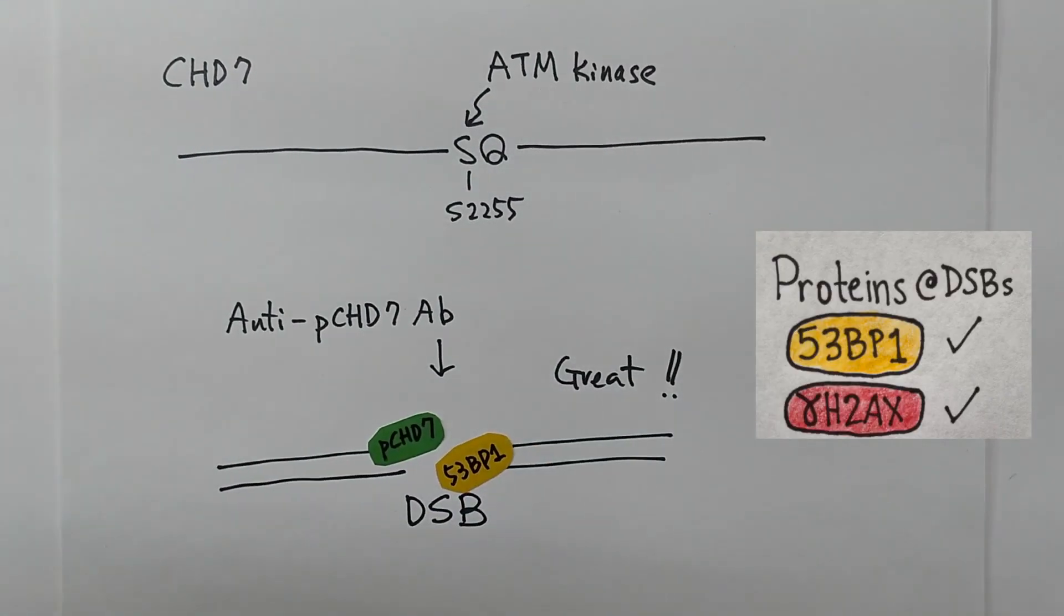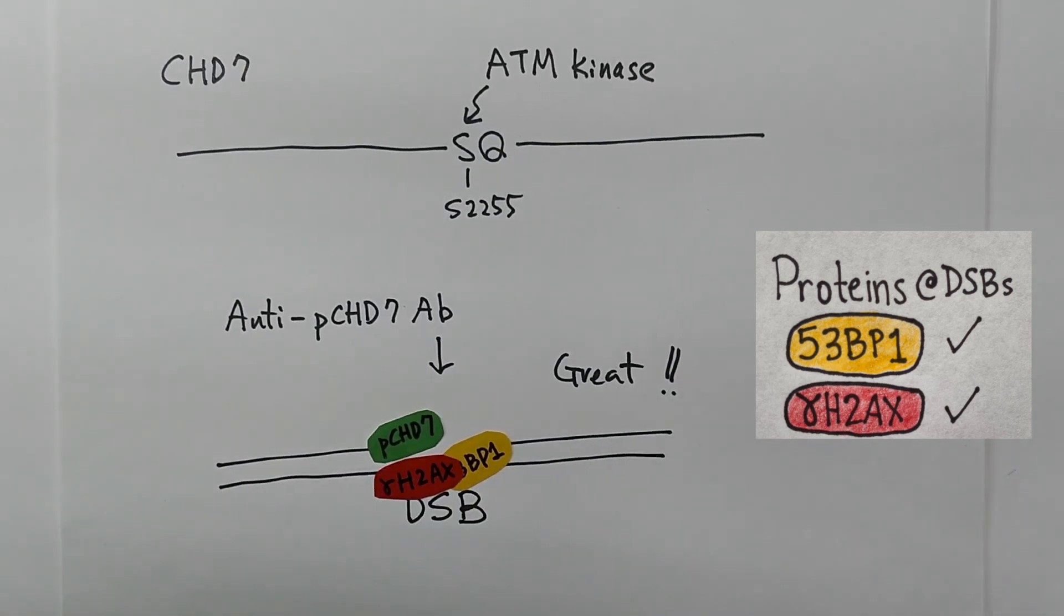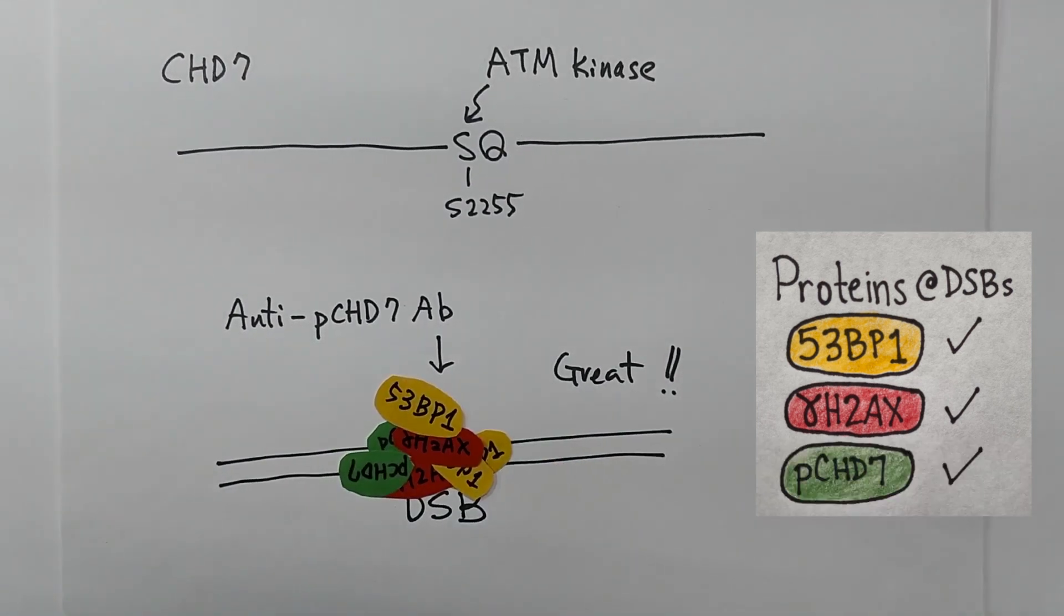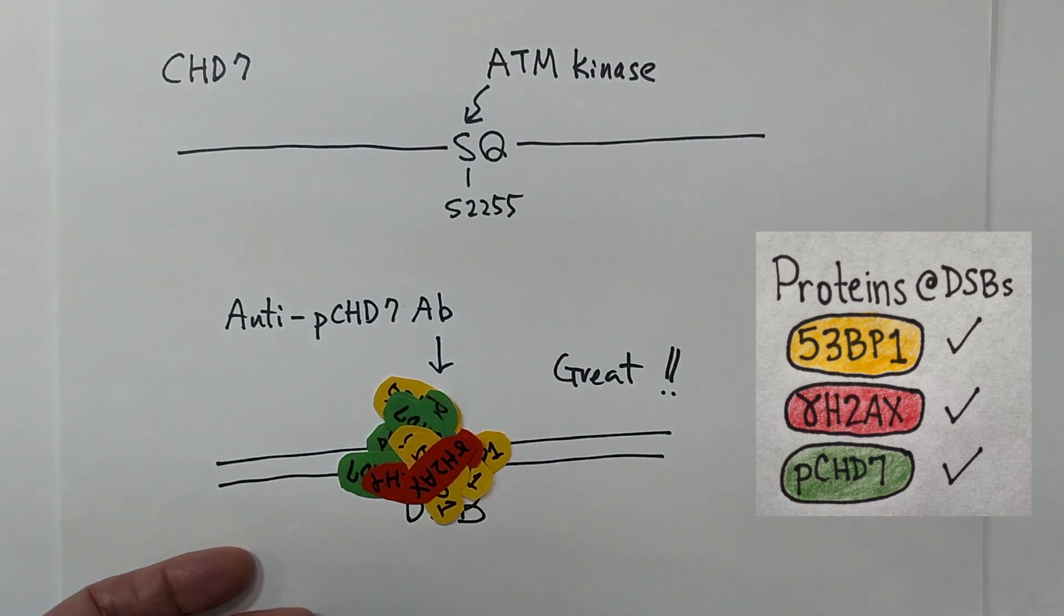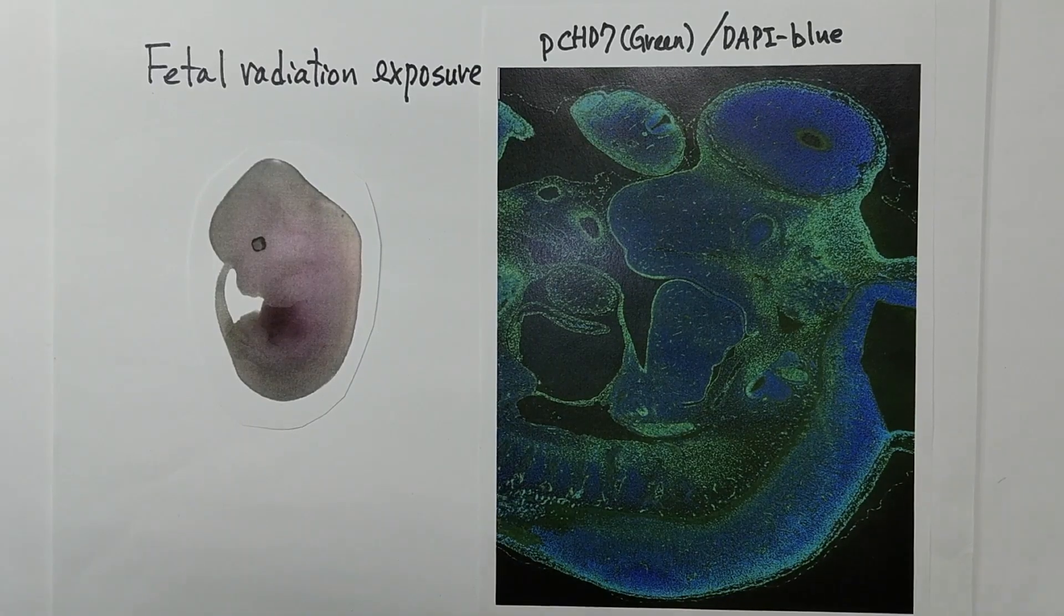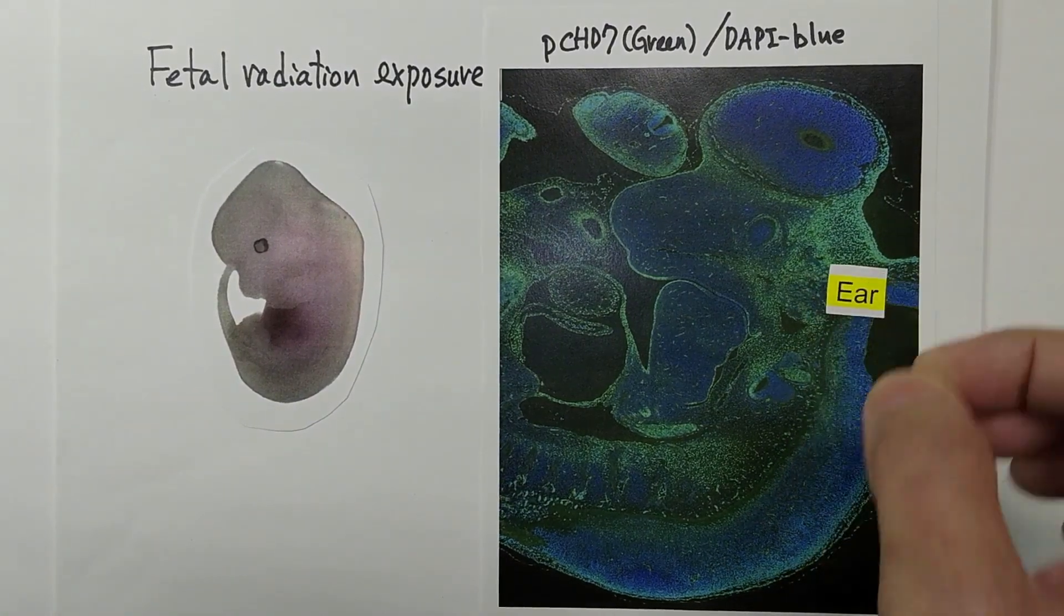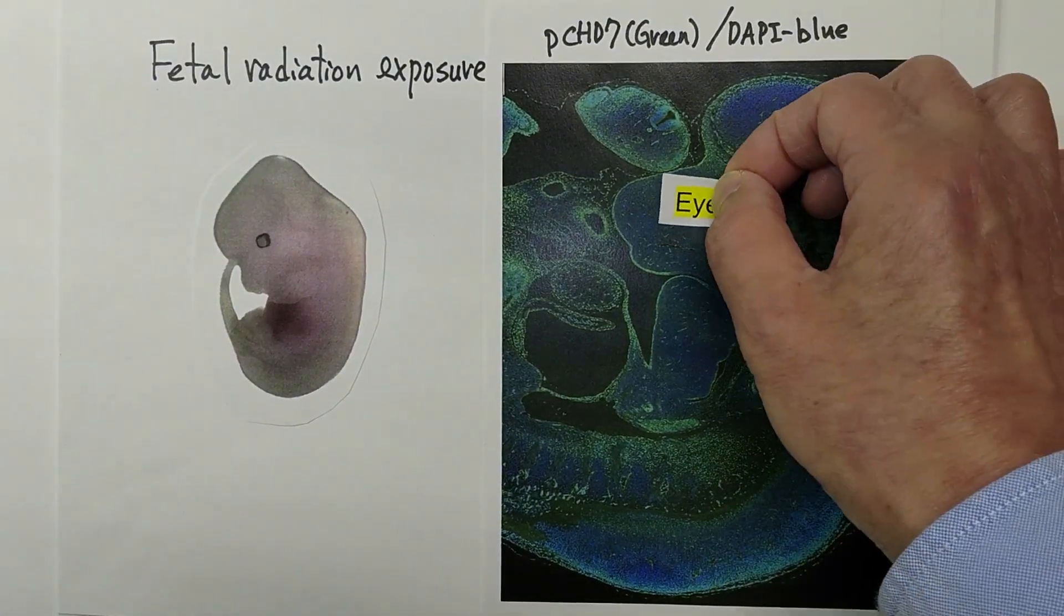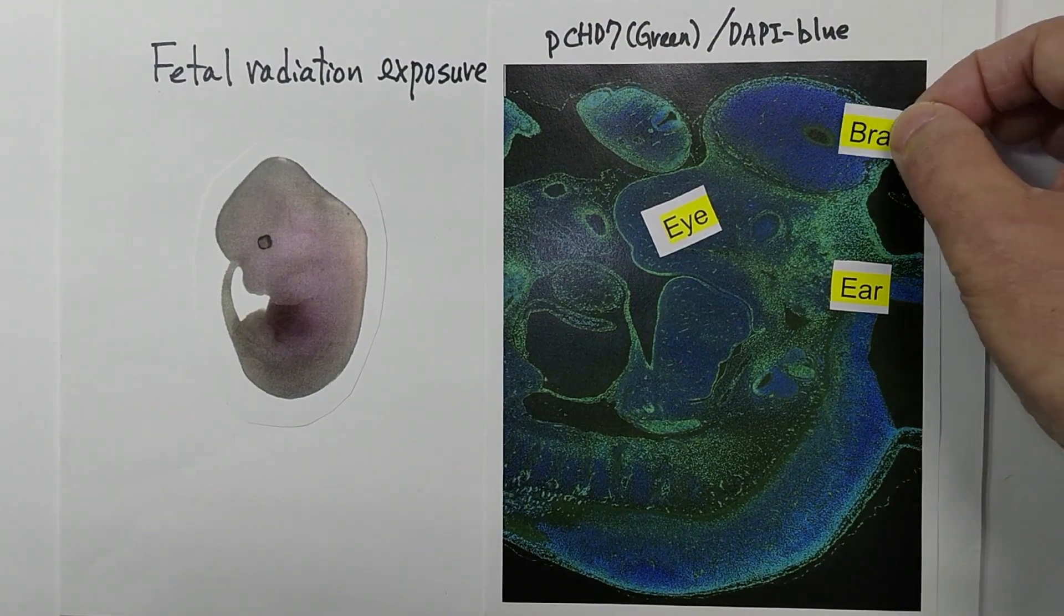we created an antibody against the phosphorylated form of CHD7 and found it strongly reacted with unrepaired DSBs. When mouse fetuses were radiation exposed, there was a strong pCHD7 antibody reaction in the neurosensory organs during morphogenesis.